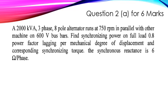Next is Question 2a of the same end semester examination Summer 2019, which is for 6 marks. The question is: a 2000 kVA, three-phase, 8-pole alternator runs at 750 rpm in parallel with other machines on 600 V bus bars. Find the synchronizing power at full load, 0.8 power factor lagging per mechanical degree of displacement, and the corresponding synchronizing torque. The synchronous reactance is 6 ohm per phase.